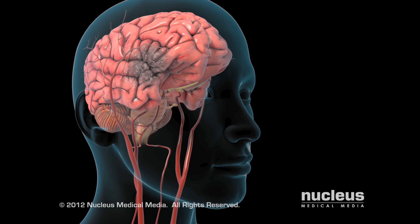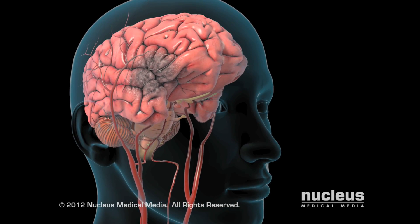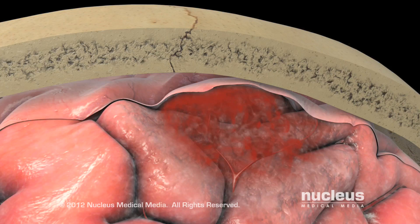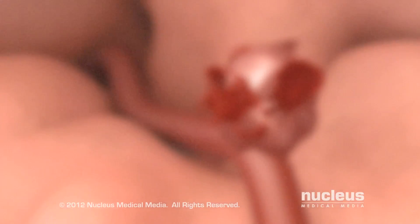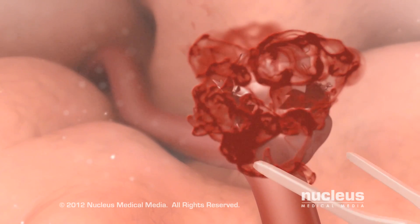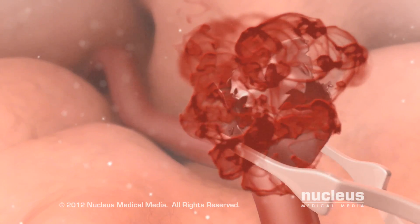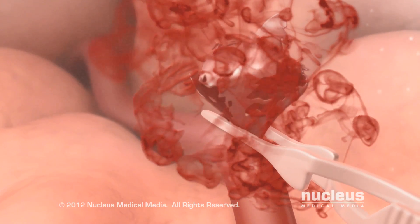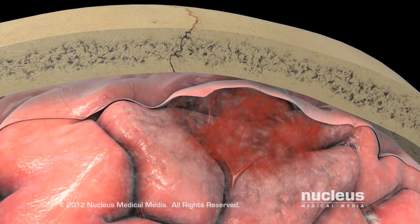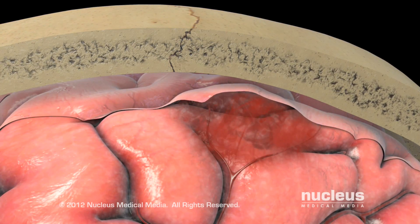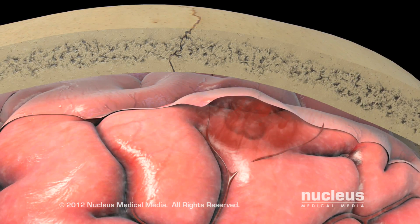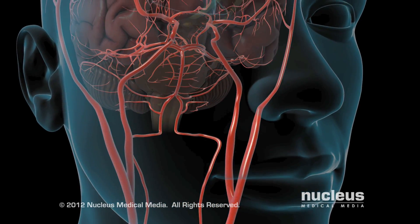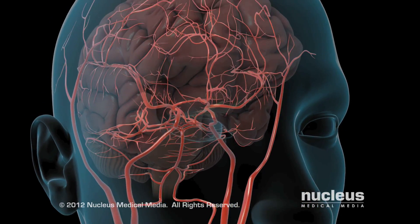Immediate treatment for your stroke may help to minimize brain cell injury and death. In the case of hemorrhagic stroke, emergency surgery may be necessary to repair damaged arteries or reduce the pressure of the blood on your brain. You may be given medication to help the brain's blood flow return to normal.